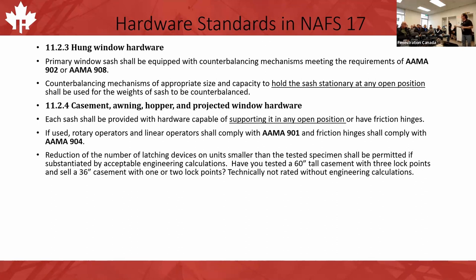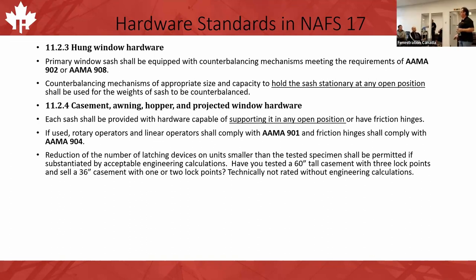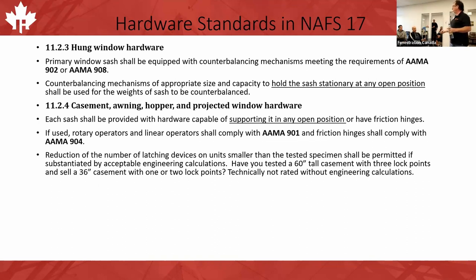Something nobody thinks about: the reduction of number of latching devices on units smaller than the tested specimen is permitted only if substantiated by acceptable engineering calculations. So if you tested a 60-inch tall casement with a three-point tie bar and you build the window at three feet with a one-point latch, you can't do that unless it's been engineered. If a client's casement top is blowing out, you need to have engineering calculations to back up that single-latch configuration — you can't simply point to the five-foot test report with a three-latch tie bar.